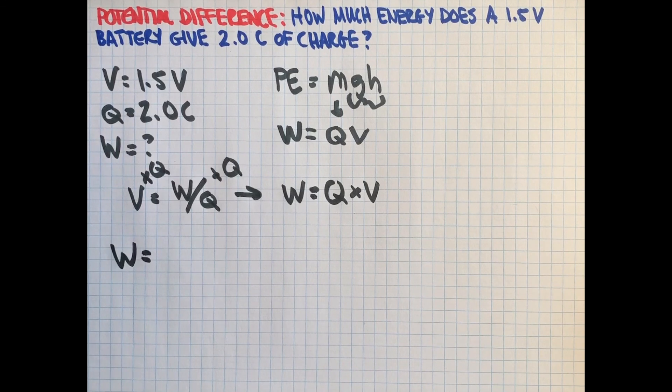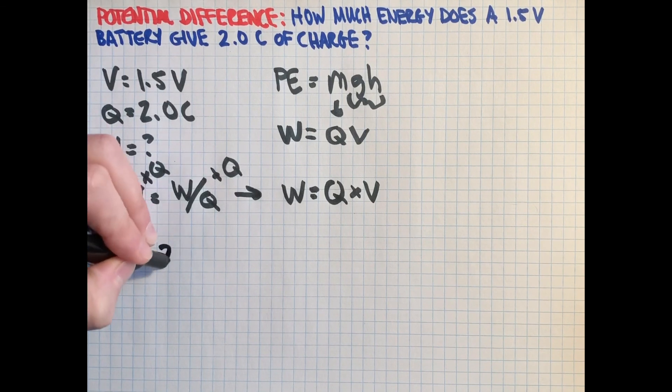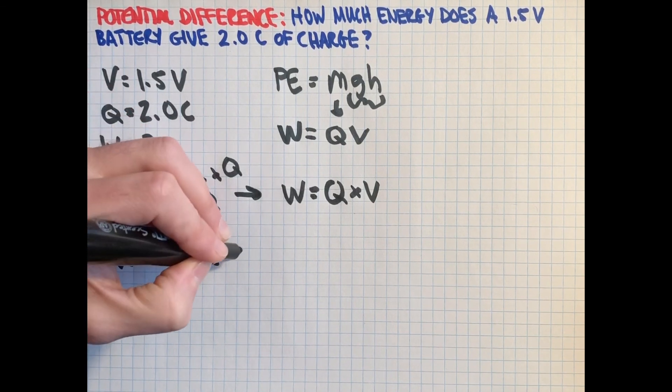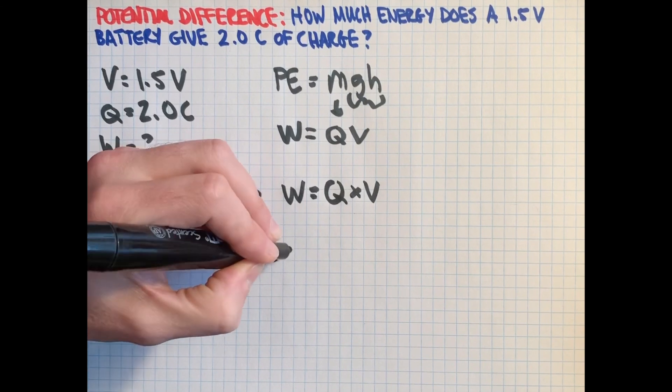And so the work done or the work that this 1.5 volt battery could do with 2 coulombs of charge is then 2 coulombs times the 1.5 volts.